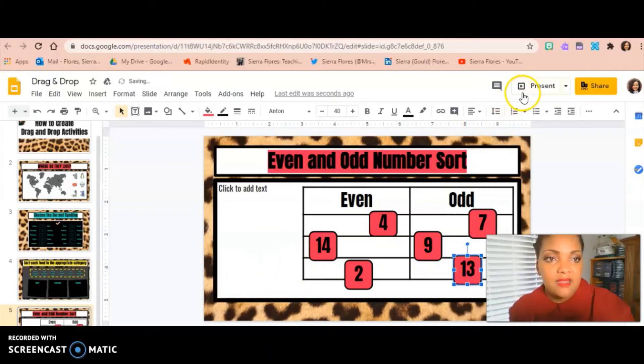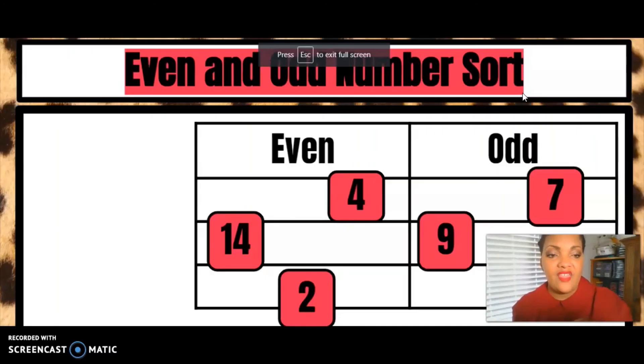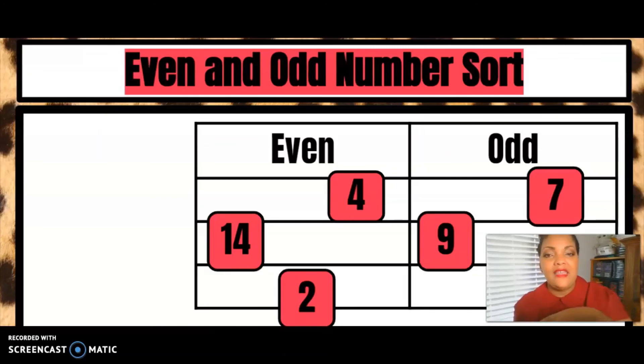And then I can display this. And then if you want, you can have a number talk with your class so that they can talk about, well, we put four in the even category. Why is four even? And have a talk about that so that, because it's one thing for them to be able to know, okay, even odd, even odd. I have these numbers memorized, but it's a completely different story whenever you ask them, but why is it even?